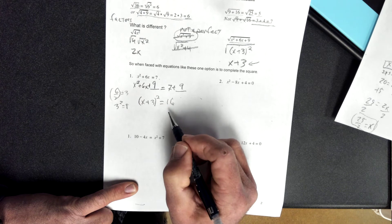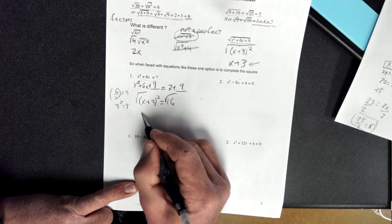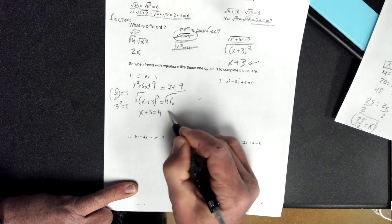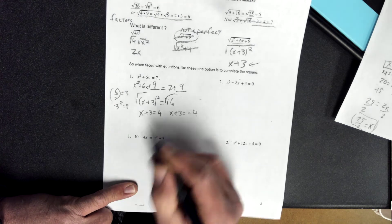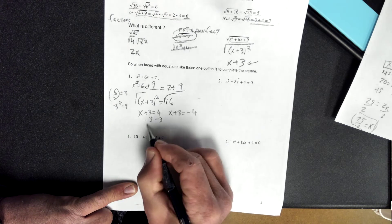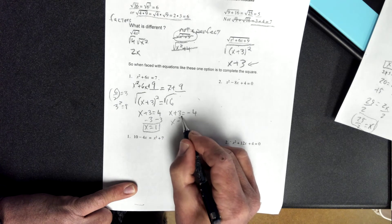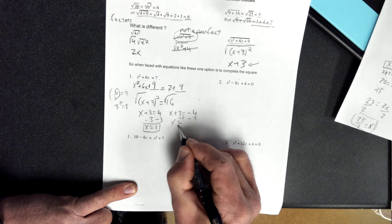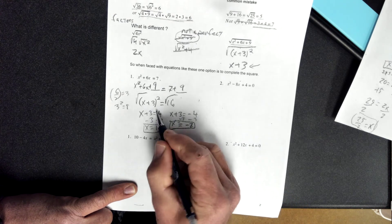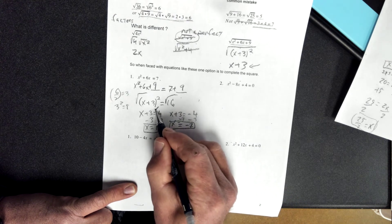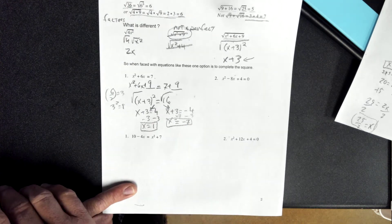Now I can start peeling away those layers — back to the onion method. I take the square root and get x plus 3 equals 4, and x plus 3 equals negative 4. I subtract 3 and get x equals 1, and x equals negative 7. It's important when we take that square root to split into two equations, because these answers aren't going to be plus and minus the same thing.